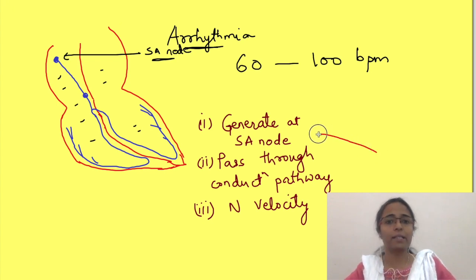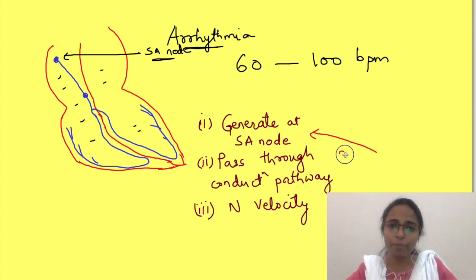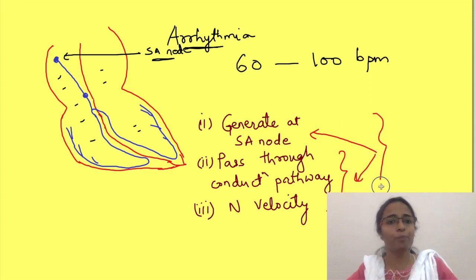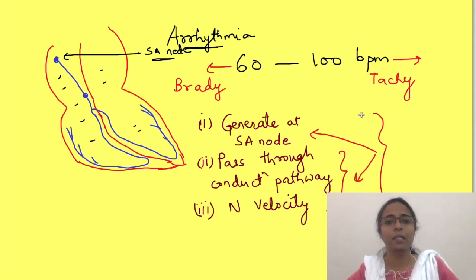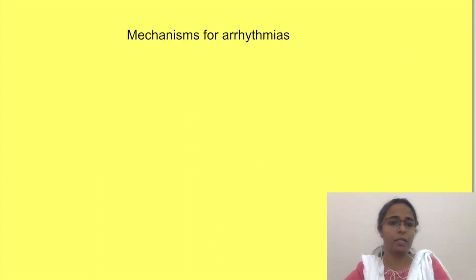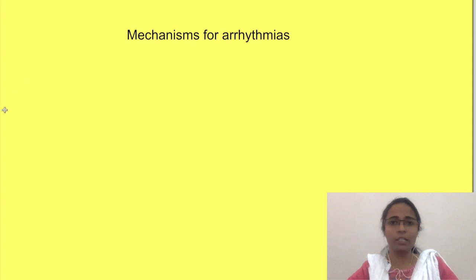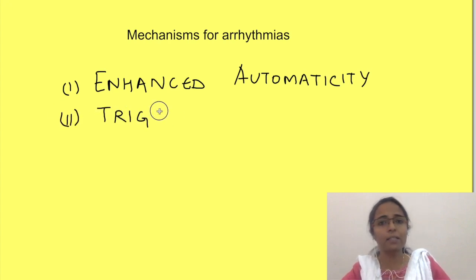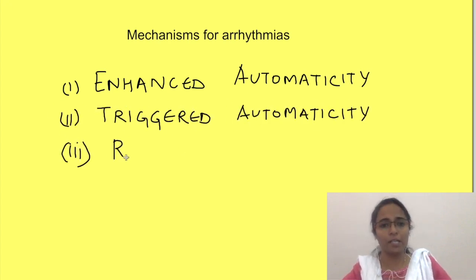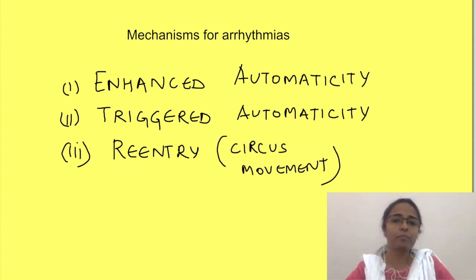Now remember, arrhythmias may arise either due to abnormality of impulse generation or conduction or both. They are called bradyarrhythmias when heart rate is less than 60 beats per minute, and tachyarrhythmias when heart rate is more than 100 beats per minute. In this video, we will restrict to tachyarrhythmias. There are three major mechanisms by which tachyarrhythmias may develop: first is enhanced automaticity, then triggered automaticity, and the third one is re-entry, also known as circus movement. We will deal with each of them one by one.